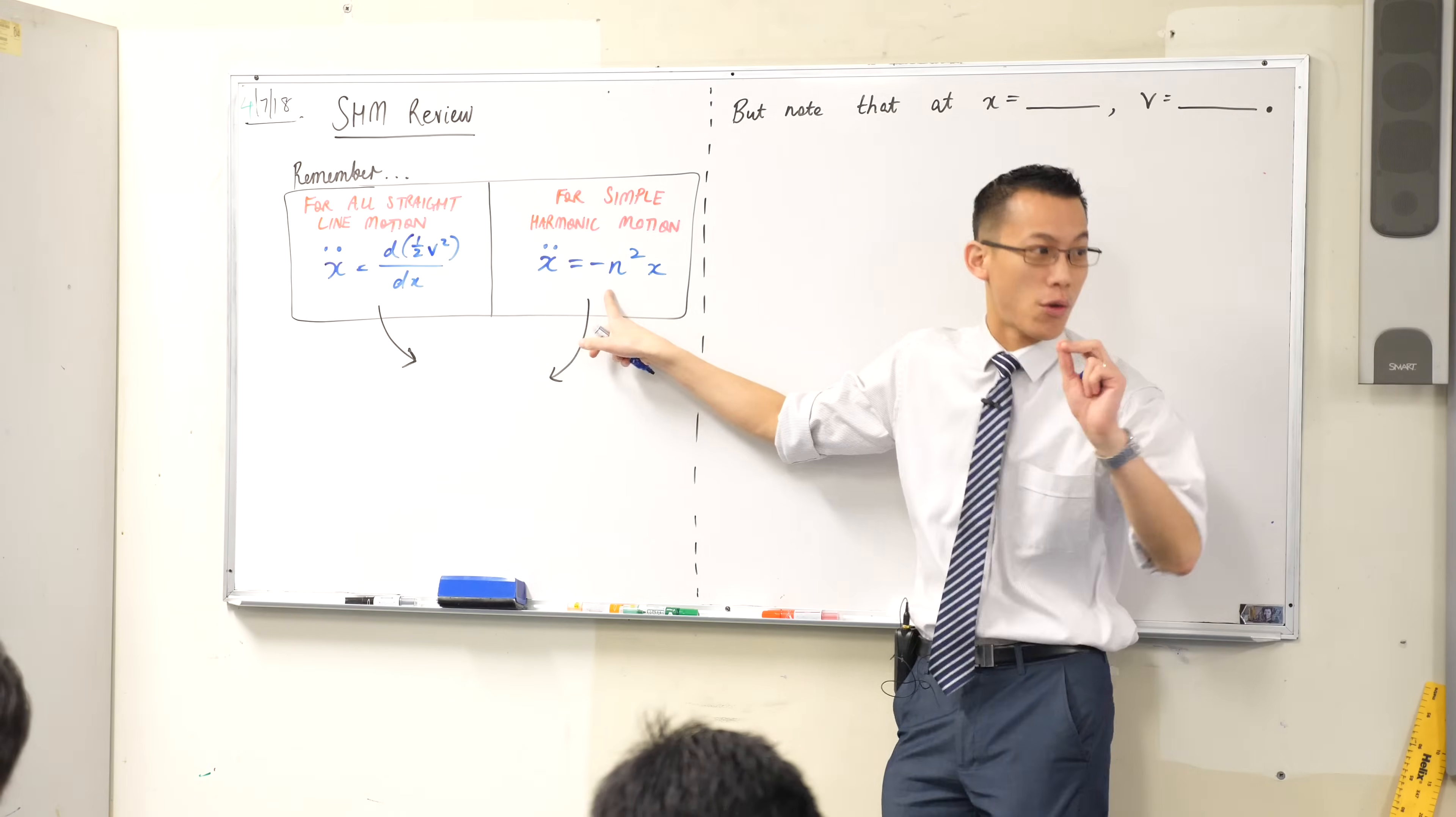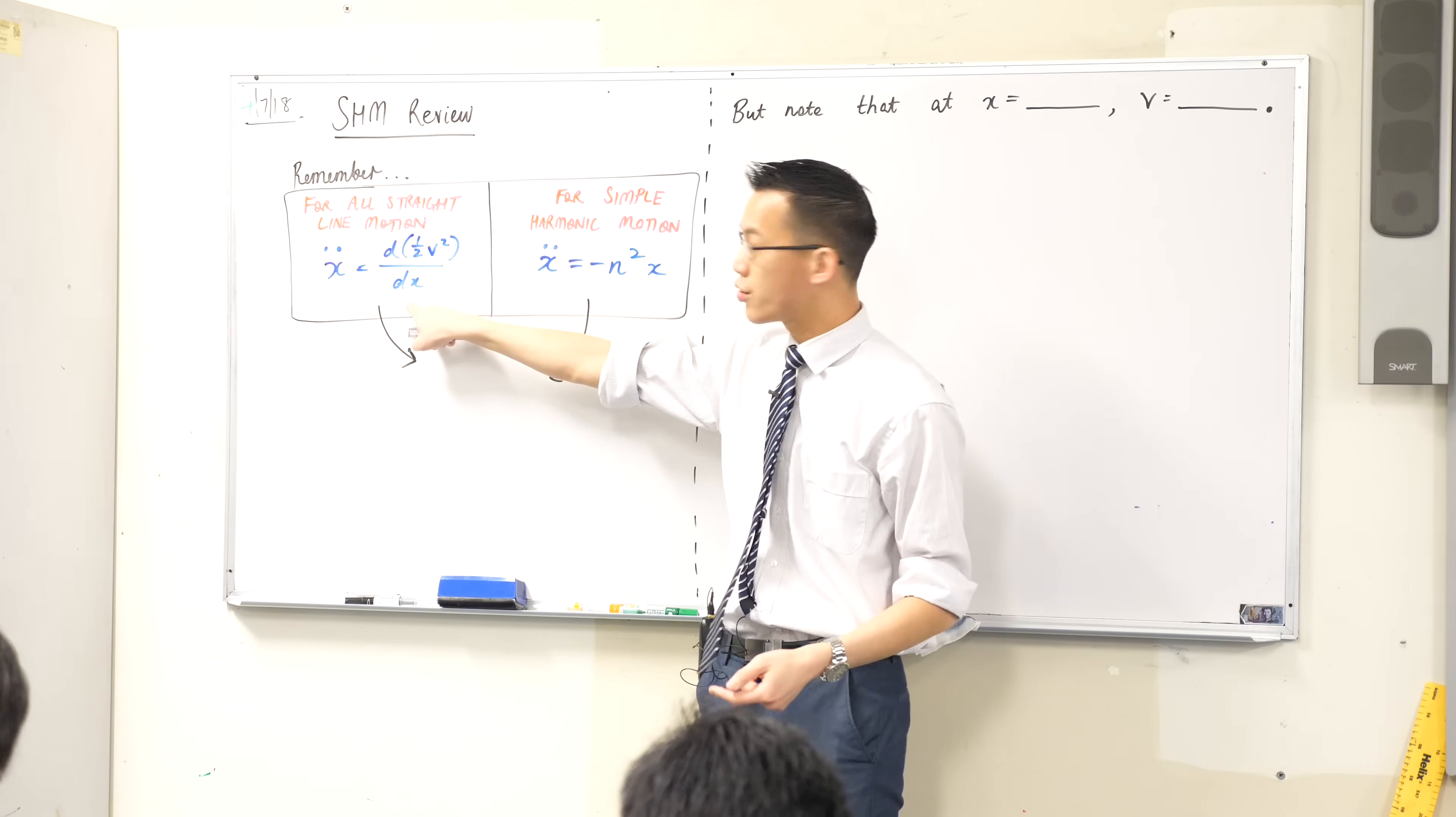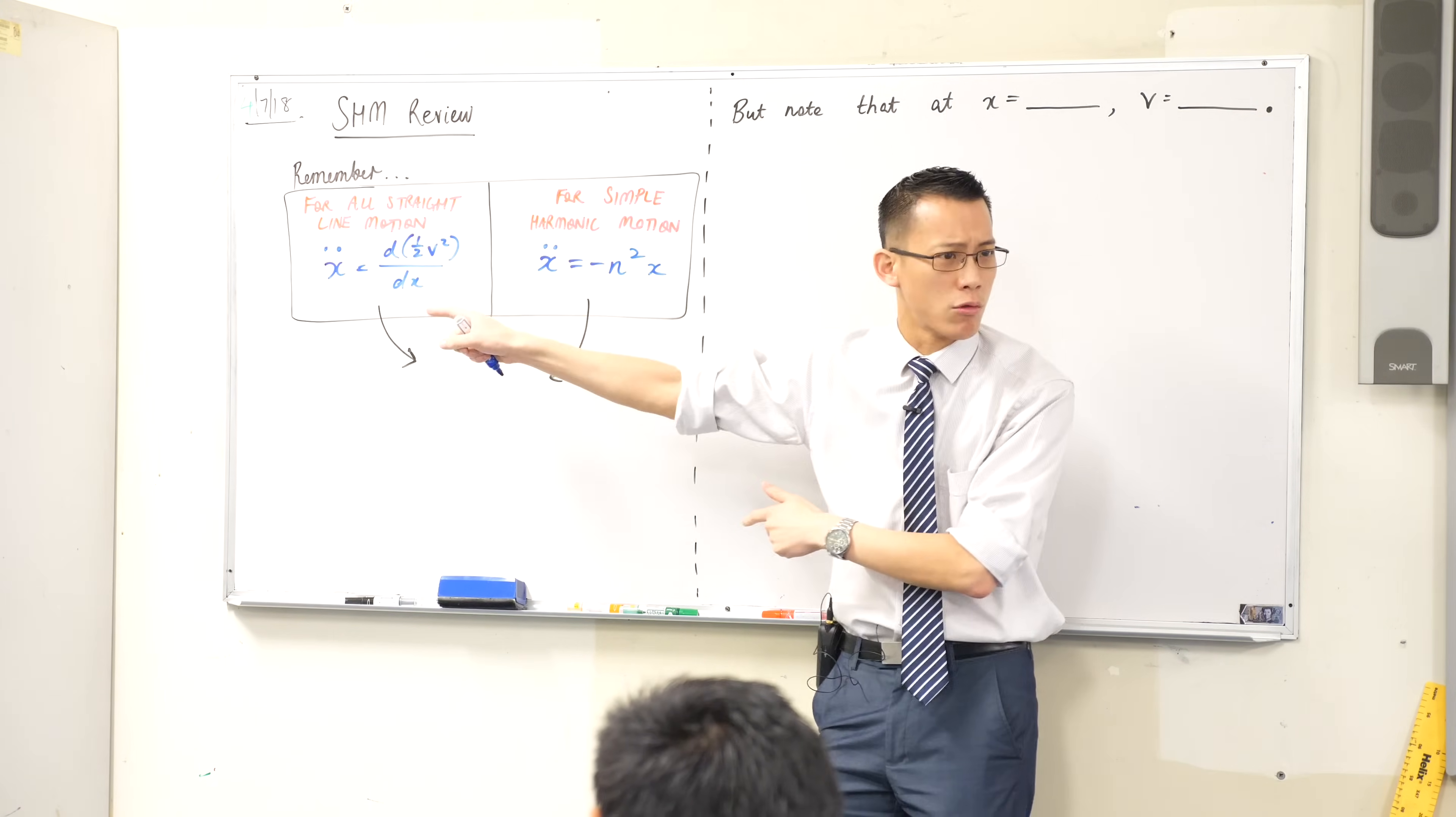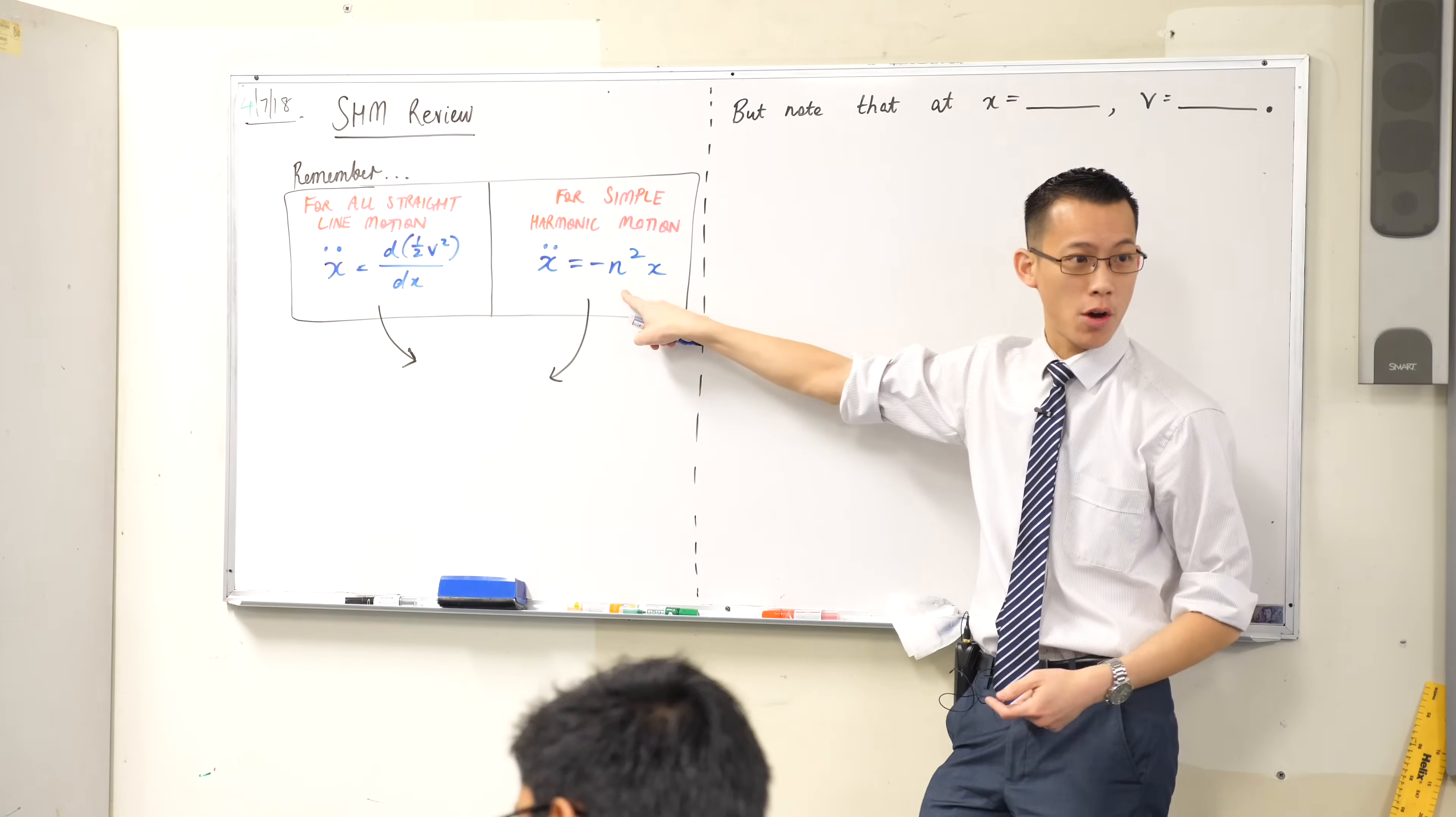And you might remember the half v squared comes from integrating v with respect to x and you get half v squared and you get chain rule and all that kind of thing. So this is true only for simple harmonic motion. It comes out of sine and cosine. But this is true for all straight line motion. Where did that come from? It came from the chain rule. Actually I think we used the chain rule twice. So this is always true. This is true for simple harmonic motion.